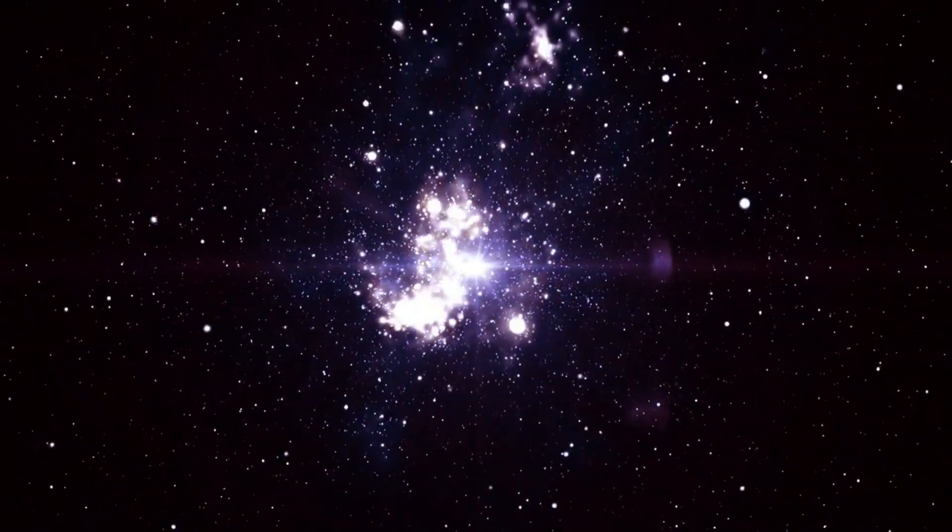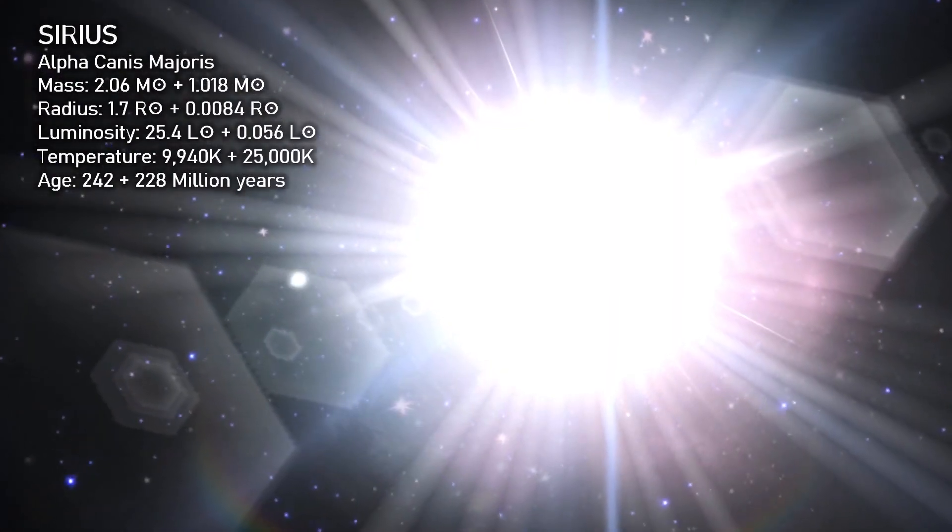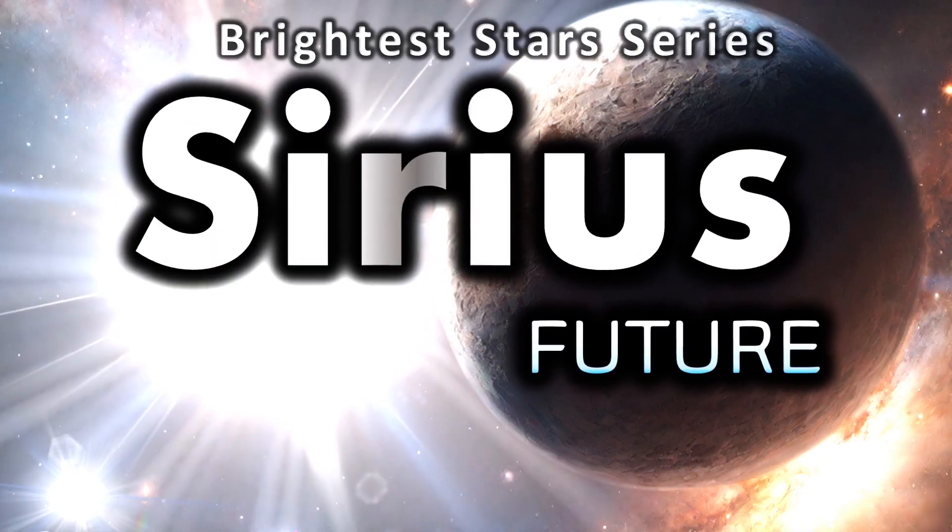Eventually Sirius A will become a white dwarf, accompanied by its already tiny partner. The two stars will continue their mystical dance for eons and eons, until eventually their light will fade and go away for good.